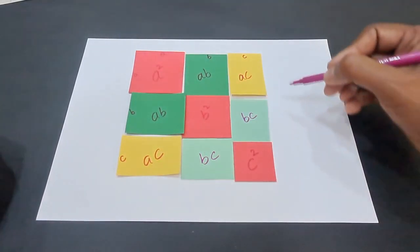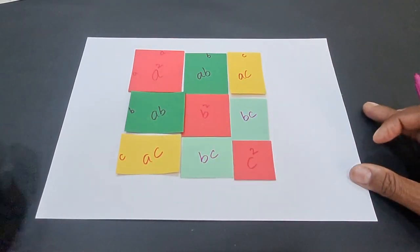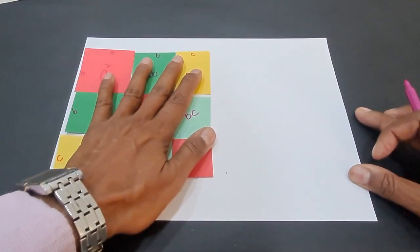And this will be C times C, which is C². So you have calculated the areas of all the 6 plus 3, 9 figures. Now how do you get the identity?